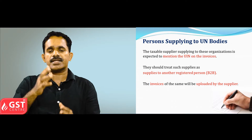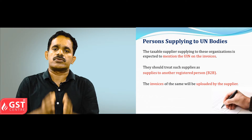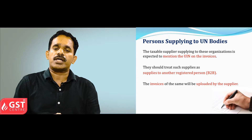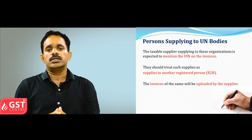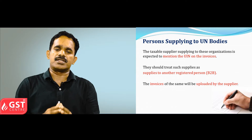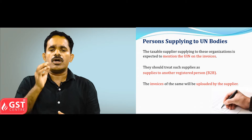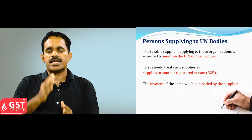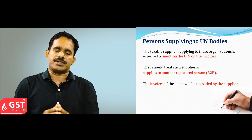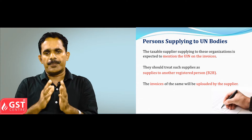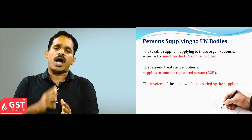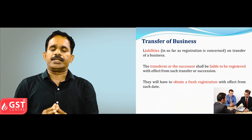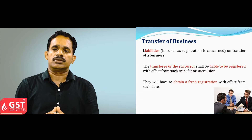Persons supplying goods or services to such UN bodies or embassies have to mention the unique identification number of the particular UN body or embassy in their invoices. All such transactions will be regarded as business-to-business transactions. The invoices issued to foreign embassies or UN bodies should be uploaded by the taxable person in the GST common portal.